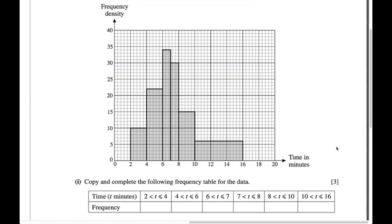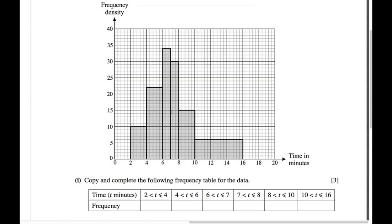Given a histogram, we just fill in the table. It's easy once you remember that frequency equals the area of the bar. For the first bar: width 2, height 10, so frequency is 20. For the second bar: width 2, height 22, so the frequency for the 4-to-6 bar is 44. The rest follow the same approach.